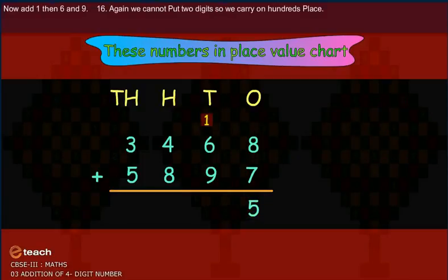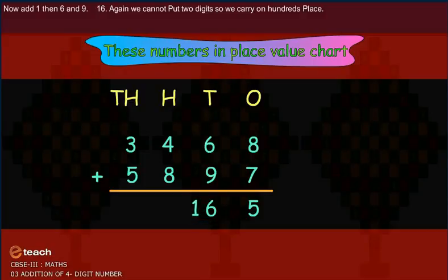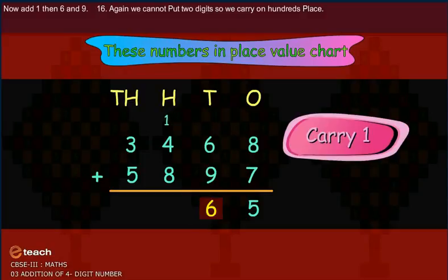Now add one, then six and nine. Sixteen. Again, we cannot put two digits, so we carry on hundreds place.